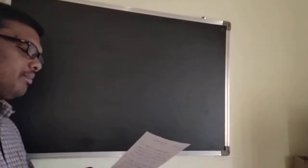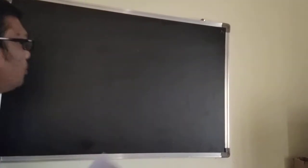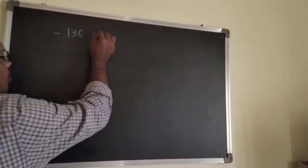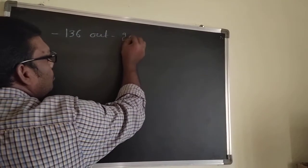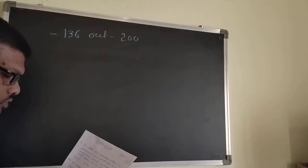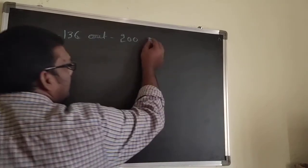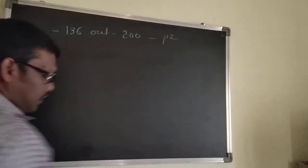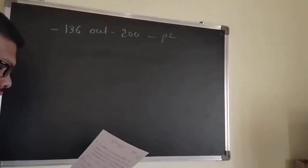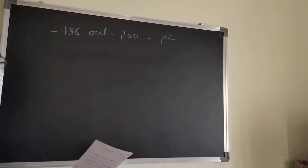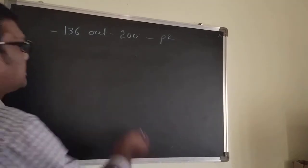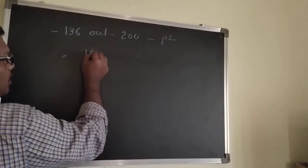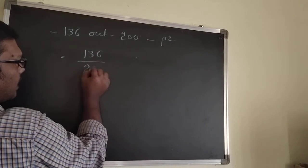The second problem: in a population, 136 out of 200 individuals are homozygous dominant. That means they gave p squared. Find out the dominant allele frequency. You can calculate the frequency as 136/200.